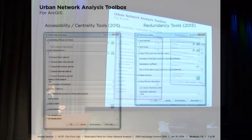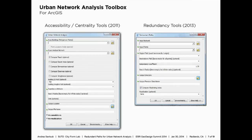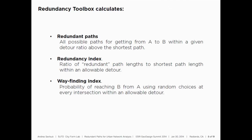What we've done recently is develop an additional part of the Urban Network Analysis tools, which we call redundancy tools. These calculate three new indices launched this past fall. They calculate redundant paths — all possible paths from A to B up to a certain detour ratio above the shortest path. If the shortest path is X, we're willing to deviate up to a certain level above X and find all the paths available within those constraints. The redundancy index is a ratio between the total linear lengths of all redundant paths divided by the linear length of the shortest path.